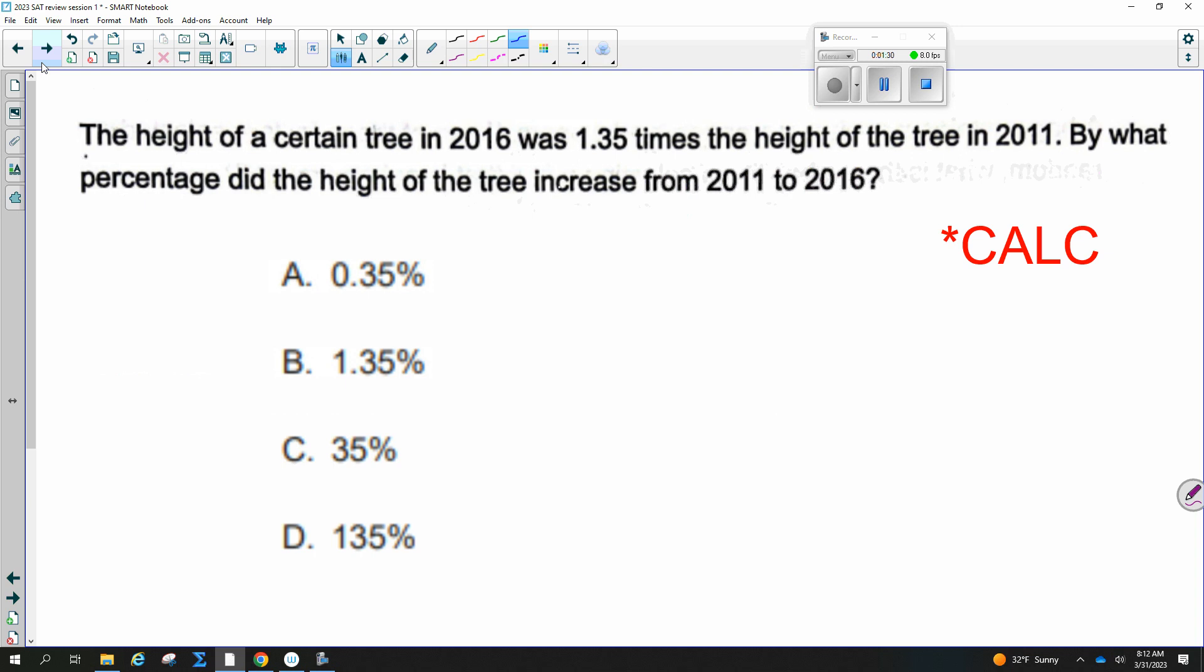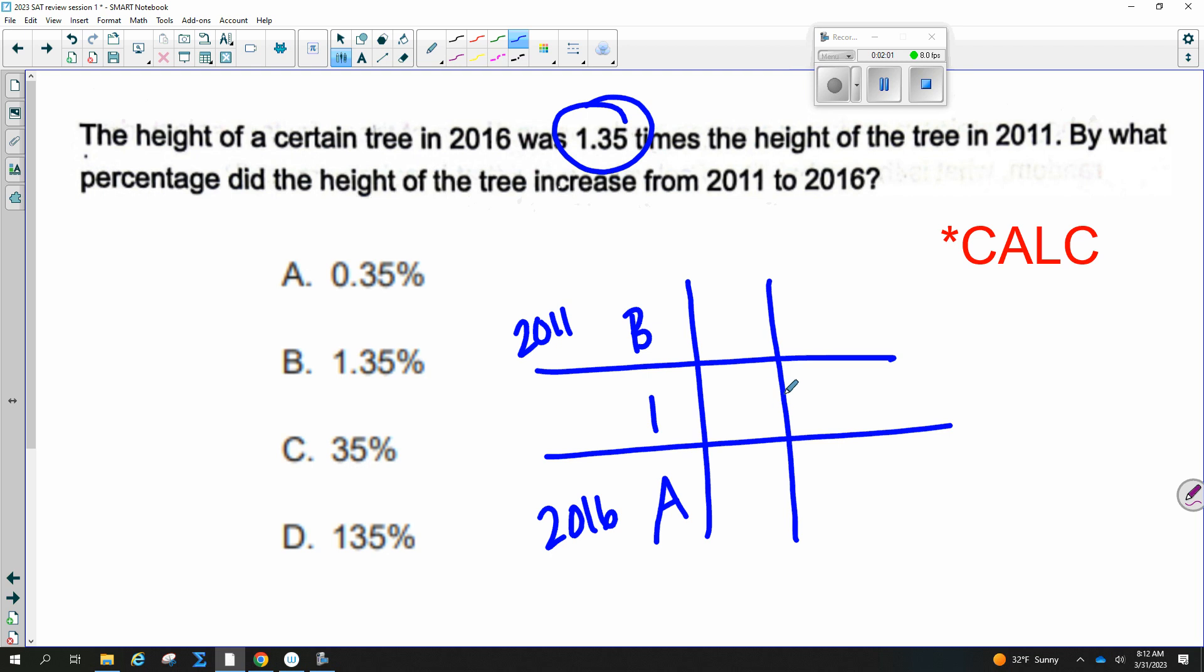The height of a certain tree in 2016 was 1.35 times the height of the tree in 2011. By what percentage did the height of the tree increase from 2011 to 2016? So this is that whole BIA box if you guys ever did this in pre-algebra or Algebra 1. The before would be 2011 and the after would be 2016.